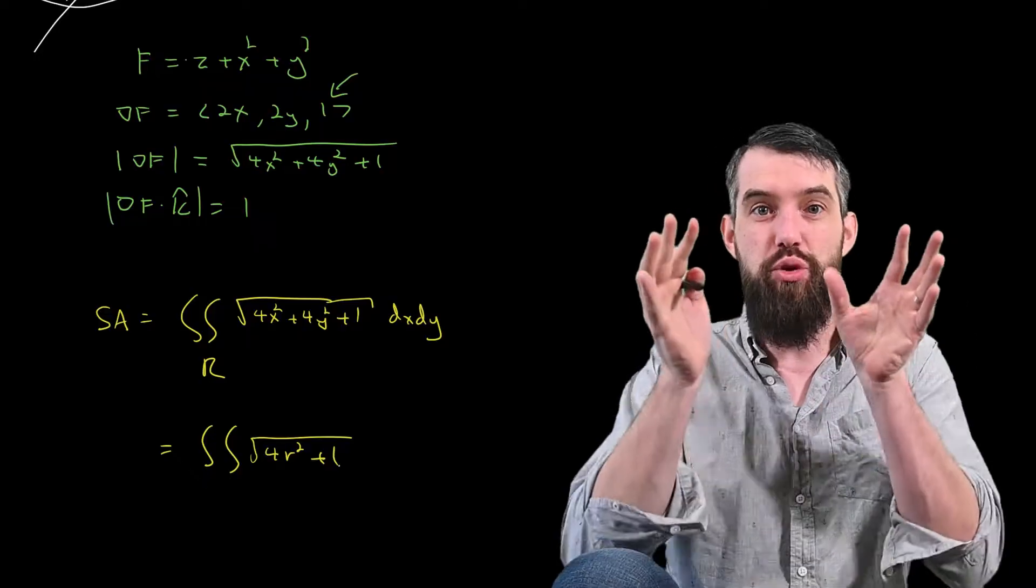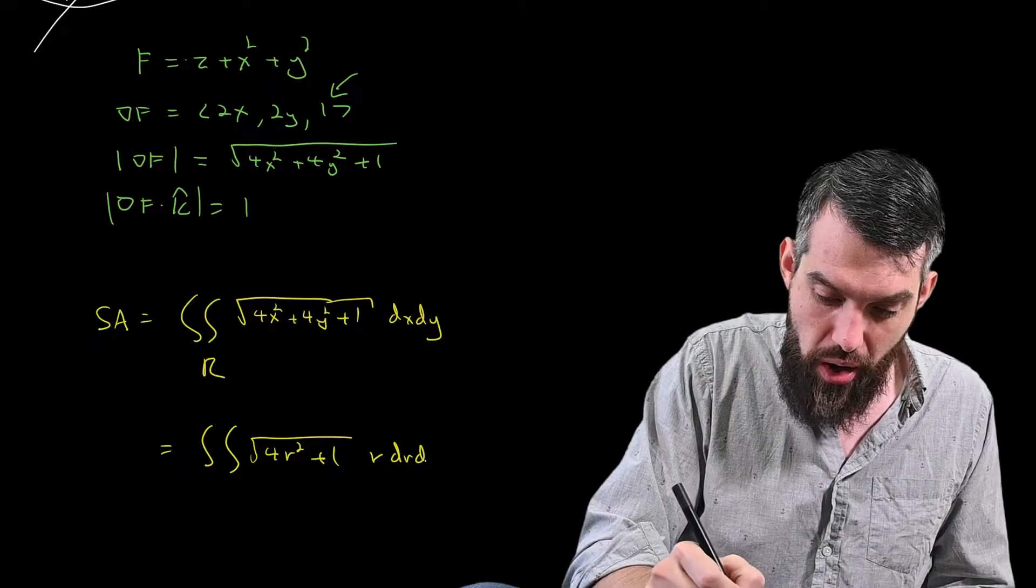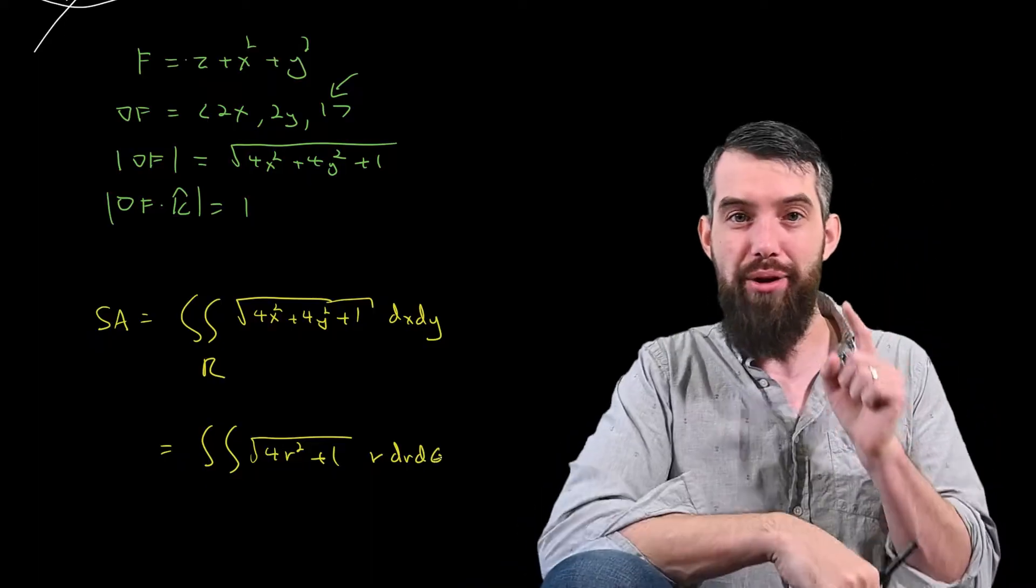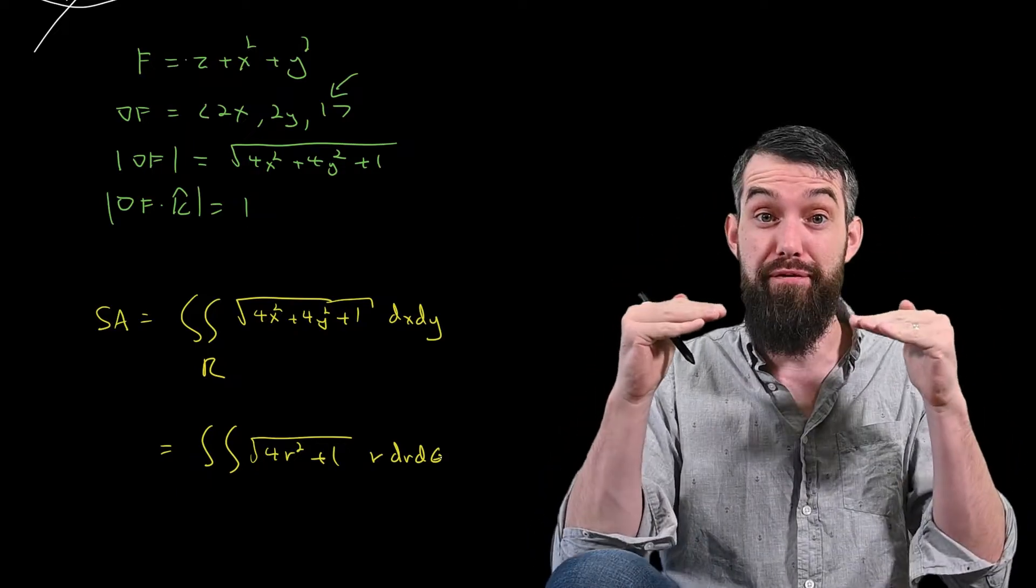And now, I have a Cartesian integral, dx dy. I'm converting it to a polar integral. As we've seen before, that conversion is r dr d theta. And indeed, here I do need that r in the r dr d theta, because I'm starting with a Cartesian integral and converting it.